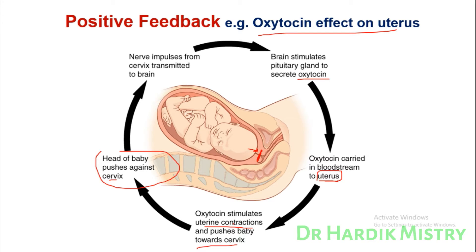Due to uterine contractions, the head of the baby moves downward, stimulating more stress receptors of the cervix. The signal is again transmitted to the brain, causing an even larger release of oxytocin, further increasing the severity of uterine contractions. This is the positive feedback mechanism illustrating the oxytocin effect on the uterus during delivery.